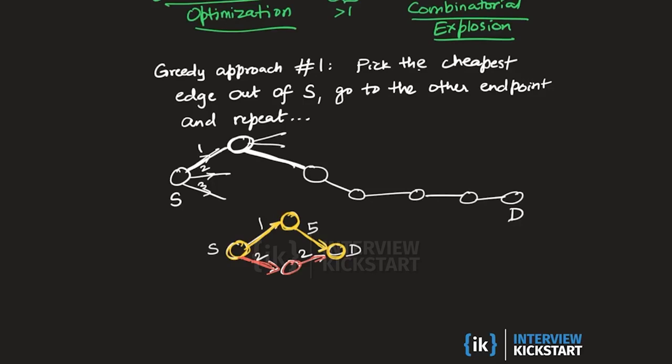So it is not necessary that at each step we have to pick the cheapest edge to elongate the path. In fact it is possible that the cheapest edge out of S might be a dead end. It may not even lead anywhere. Maybe D lies somewhere over here and this edge had a weight 1, this edge had a weight 5. If we followed the greedy strategy we would end up at a dead end. So clearly this particular greedy strategy is not going to work.